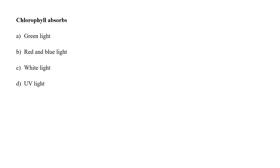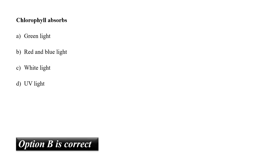Chlorophyll absorbs A. green light, B. red and blue light, C. white light, or D. UV light? According to the absorption spectra of chlorophyll, it absorbs light in red and blue wavelengths, that is long and short wavelengths of the light spectrum. Green light is not absorbed but reflected, making the plant appear green. So the correct answer is option B.